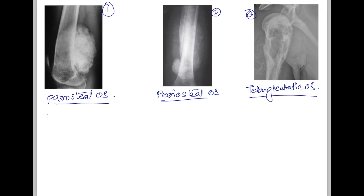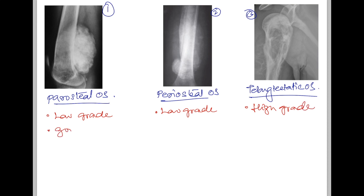Parosteal osteosarcoma is a low-grade osteosarcoma. Periosteal osteosarcoma is also low-grade, and telangiectatic is extremely high-grade. Parosteal has good prognosis, whereas periosteal also has a decent, moderate prognosis, but telangiectatic has poor prognosis.